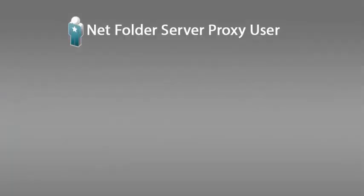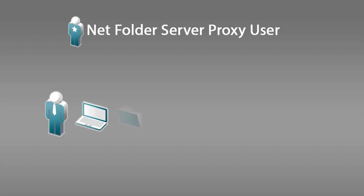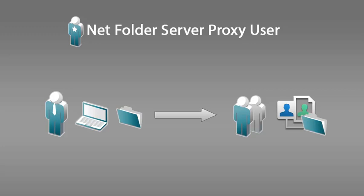The netfolder server proxy user provides access to files and folders within Filer to users who have received access through a Filer share. For example, suppose an internal user wants to give a group of external users access to a folder on the network. In Filer, he shares the folder with the users, and the users can now log into Filer and access the folder from their shared with me area. The netfolder server proxy user makes this possible, and any time the external users access the folder via Filer, it is the netfolder server proxy user who provides the access.